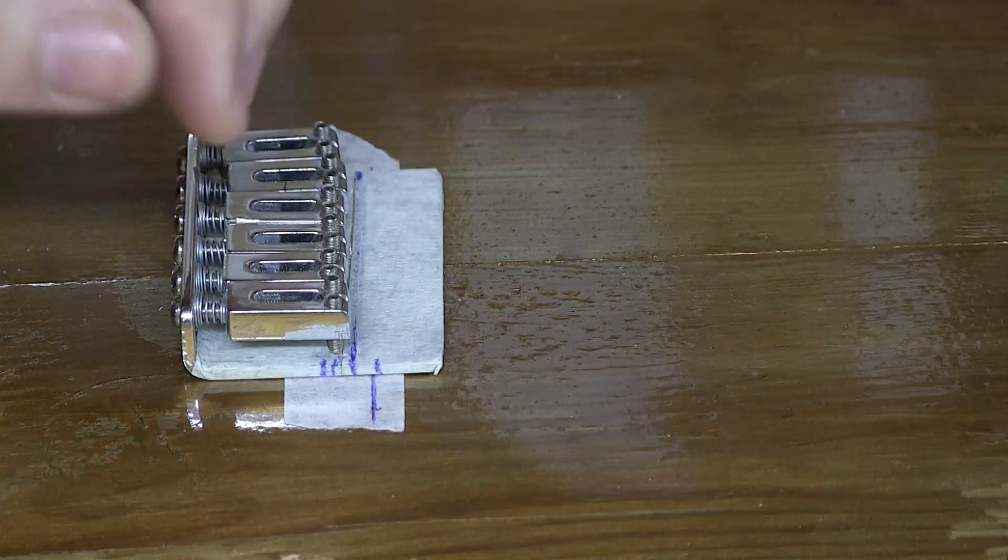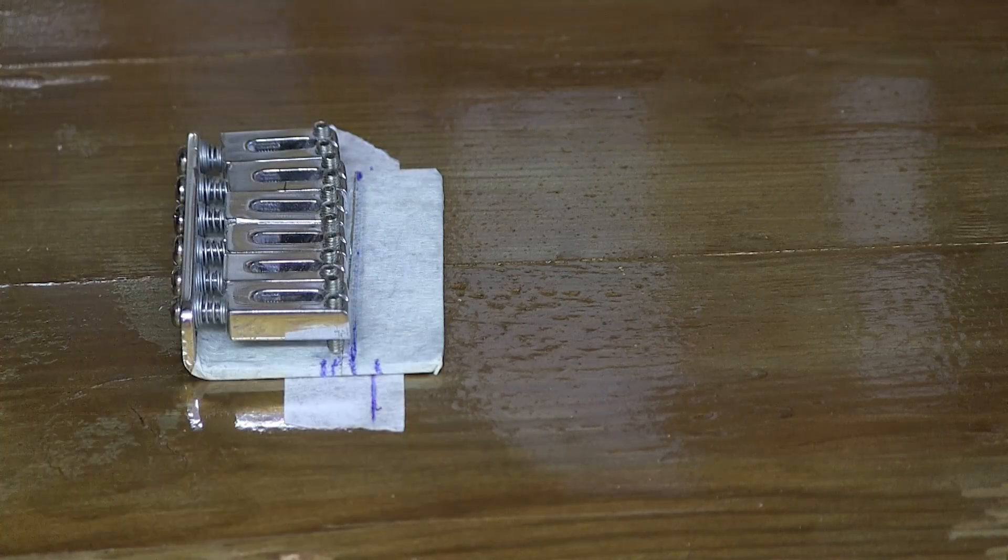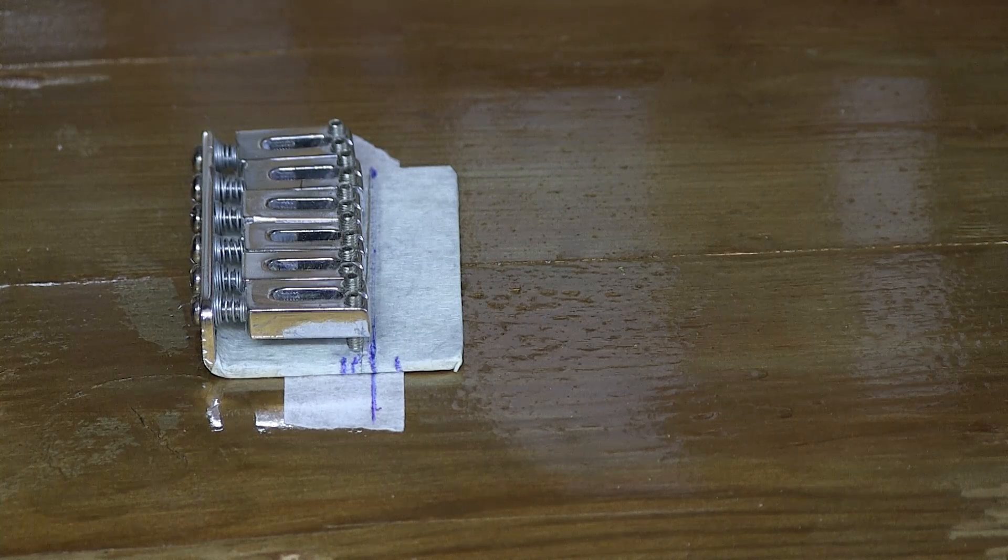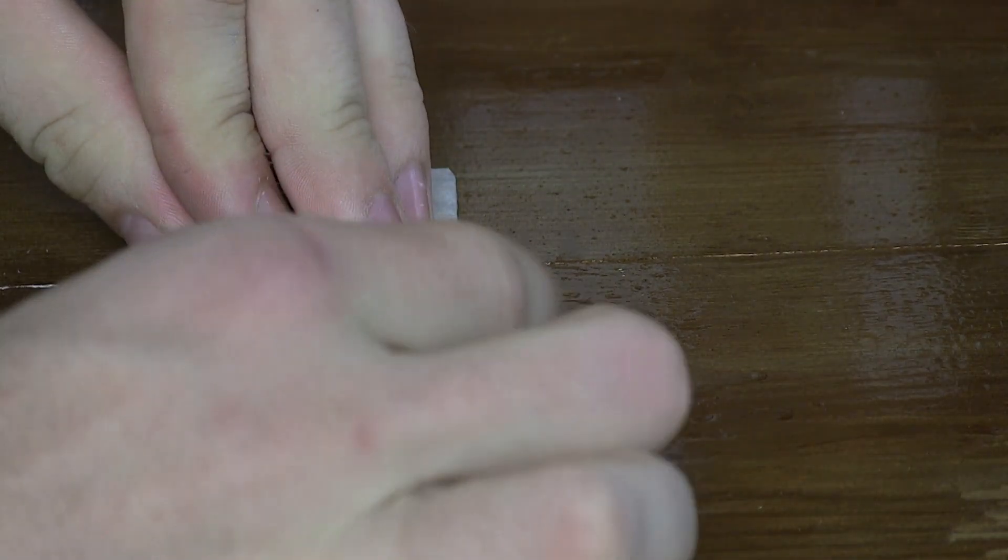And for example on Les Paul, you can flip the saddle around because it sits at an edge. It's like a little triangle, the saddle. But if you put the bridge in alignment like this that I showed you now, then you will be able to really move this.